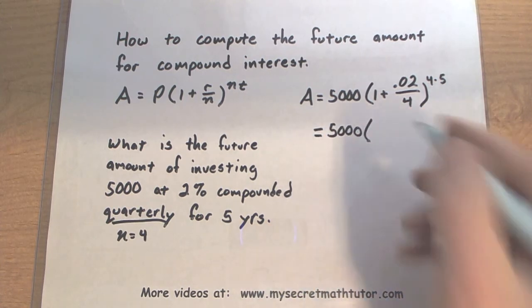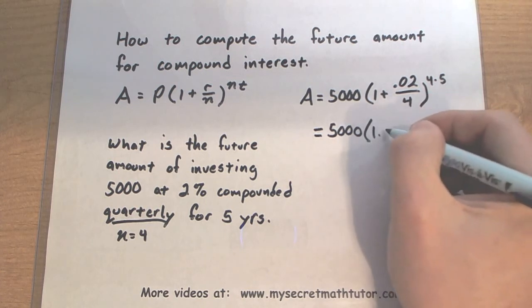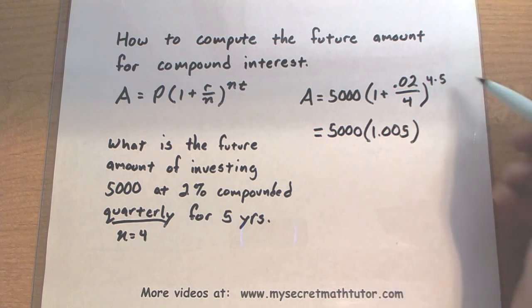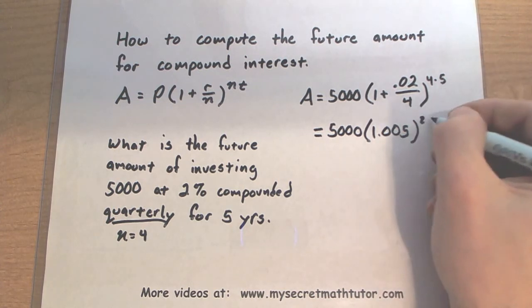If you take care of just inside parentheses, that part is 0.005, and then if you look at the exponent, four times five, well that's just 20.